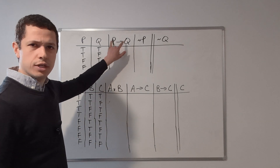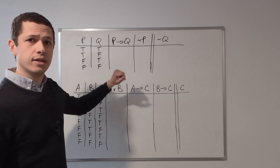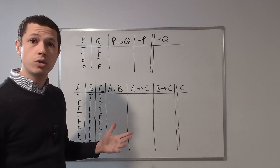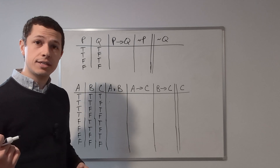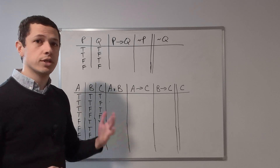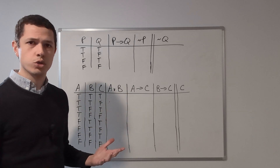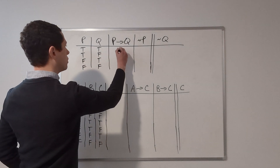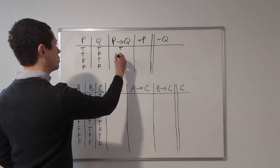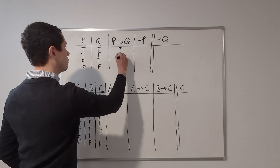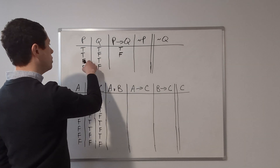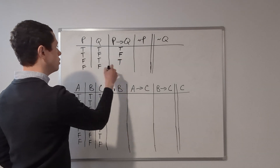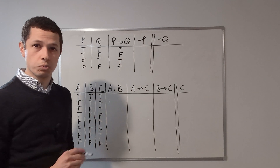We start off with this conditional: if P, then Q. We know that a conditional is false if and only if the antecedent is true and the consequent is false; otherwise it's true. So: if P is true and Q is true, our conditional is true. If P is true and Q is false, our conditional is false. If P is false and Q is true, the conditional is true. And if P is false and Q is false, the conditional is true.